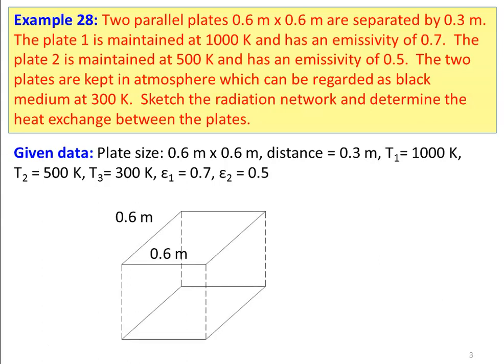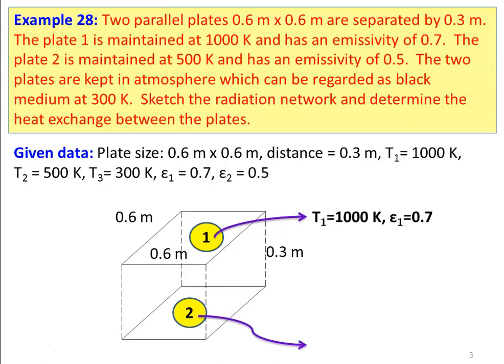This is the diagram. The top plate is 0.6 m × 0.6 m and the bottom plate is also 0.6 m × 0.6 m. The height between the plates is 0.3 m. Surface 1, the top plate, is at temperature 1000 K with emissivity 0.7. The bottom plate is surface 2 at 500 K with emissivity 0.5. The third surface is the atmosphere, regarded as a re-radiating surface at 300 K. This diagrammatic representation helps you understand the problem better.